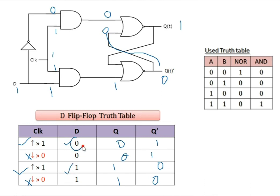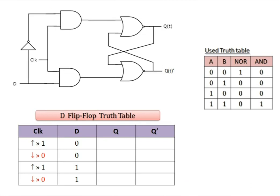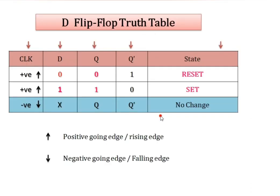Observing both cases: when data D=0, output Q=0; when data D=1, output Q=1. So whatever the input, it results in the same output. We already discussed in D latch that it is a transparent latch — zero input gives zero output, one input gives one output. This is about the transparency of the D flip-flop. Next we will see the truth table of the D flip-flop.